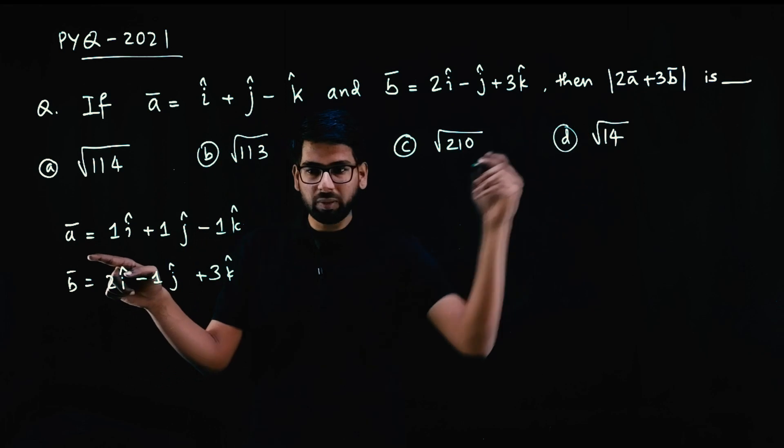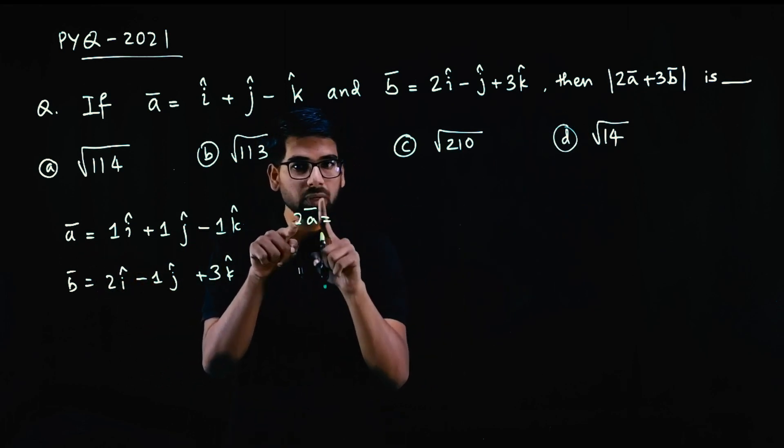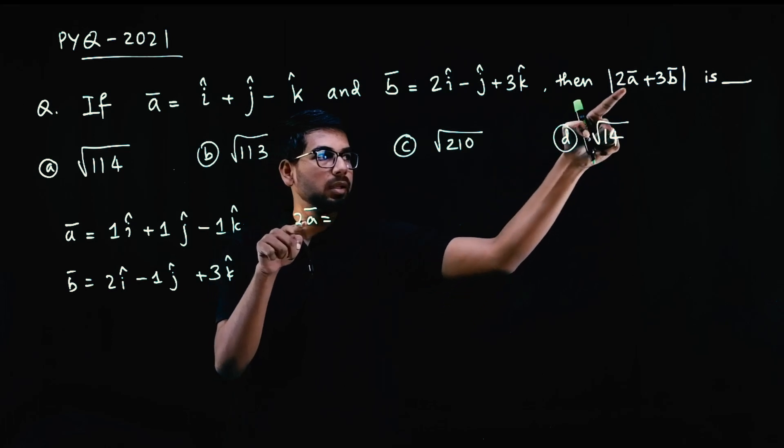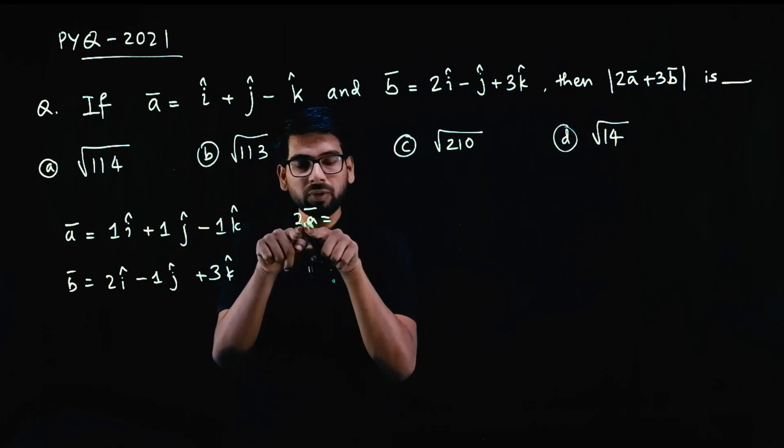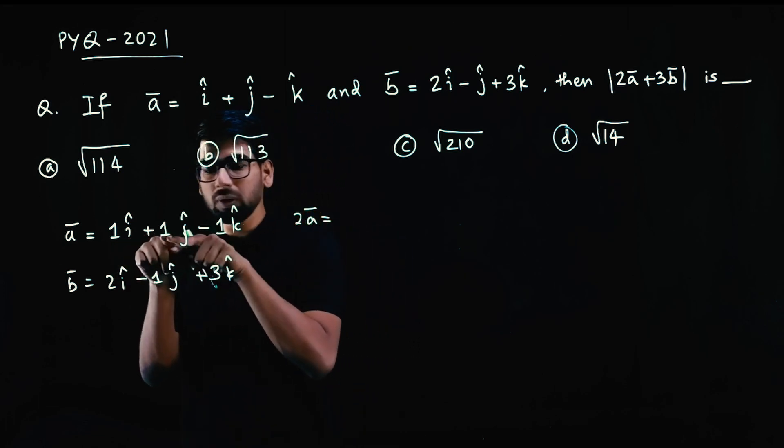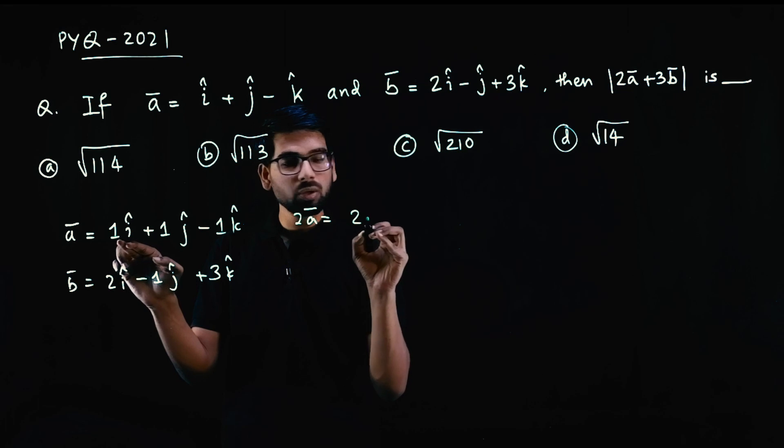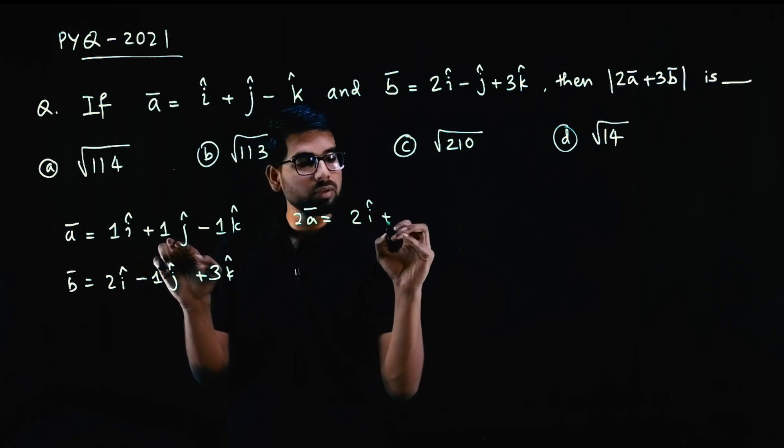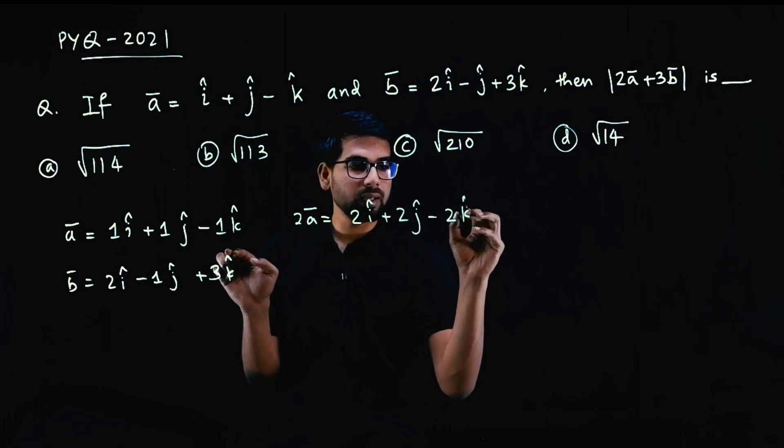When you multiply one number to one vector, 2 is a number and a is a vector. How to do that? Each coefficient multiplied by 2. So 2 into 1 is 2i cap, 2 into 1 is 2j cap, 2 into minus 1 is minus 2k cap.